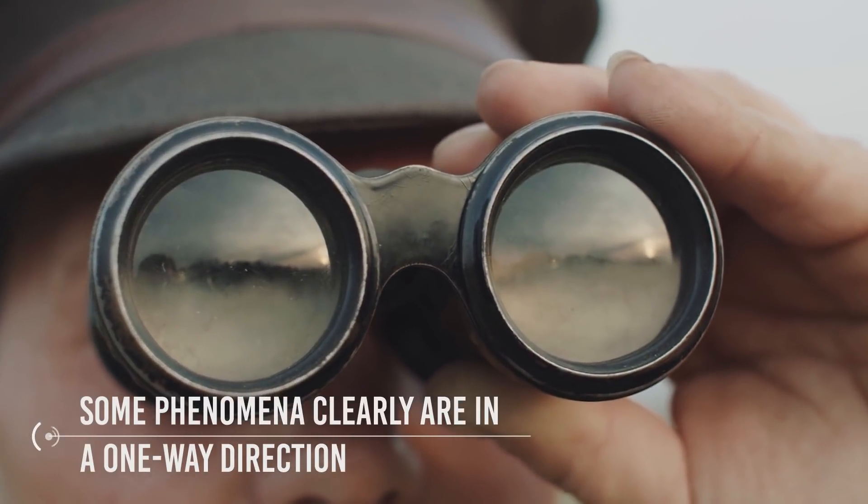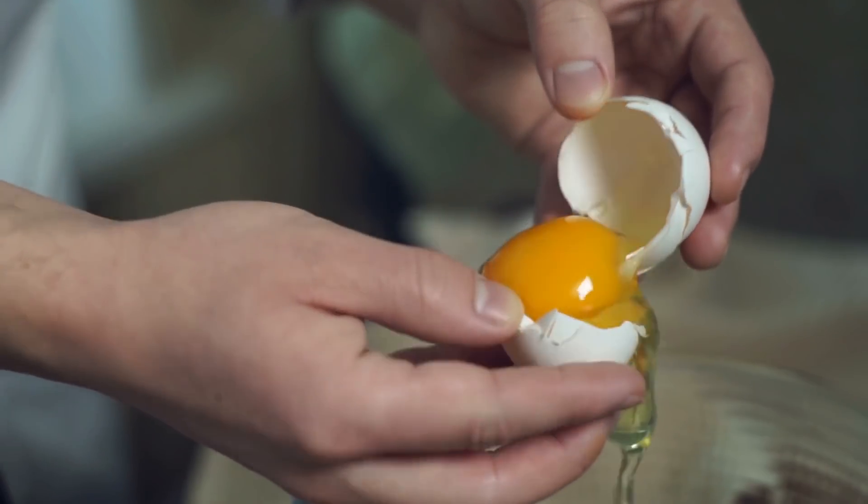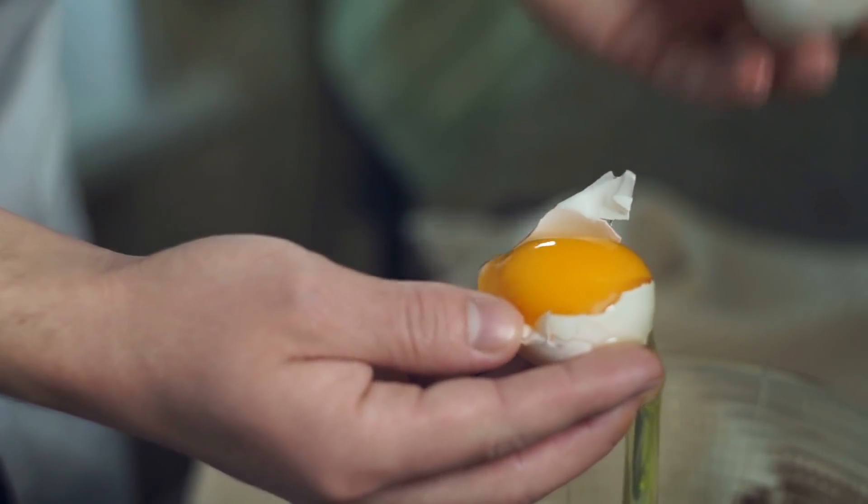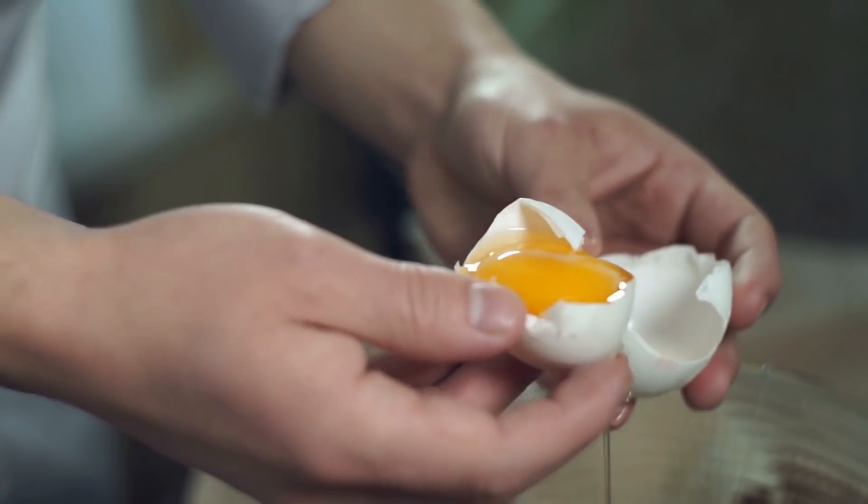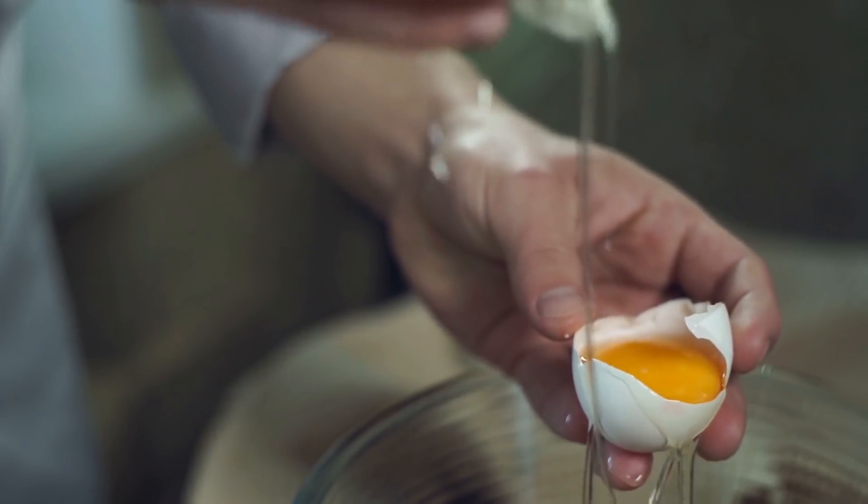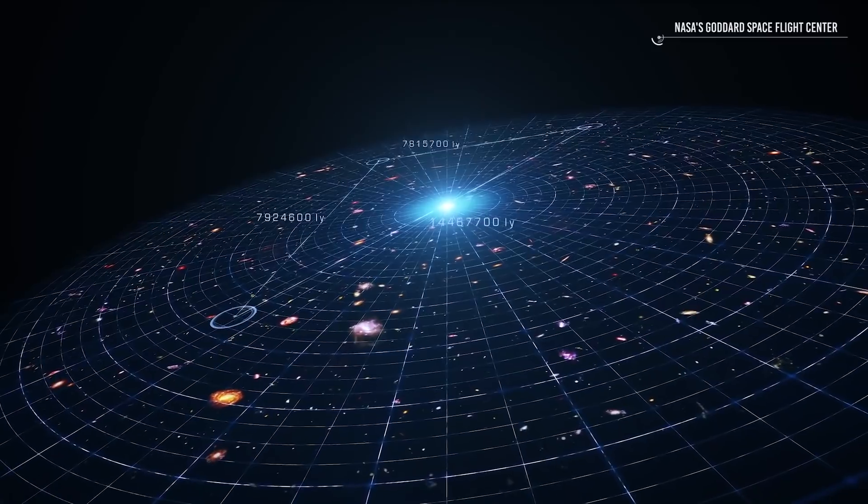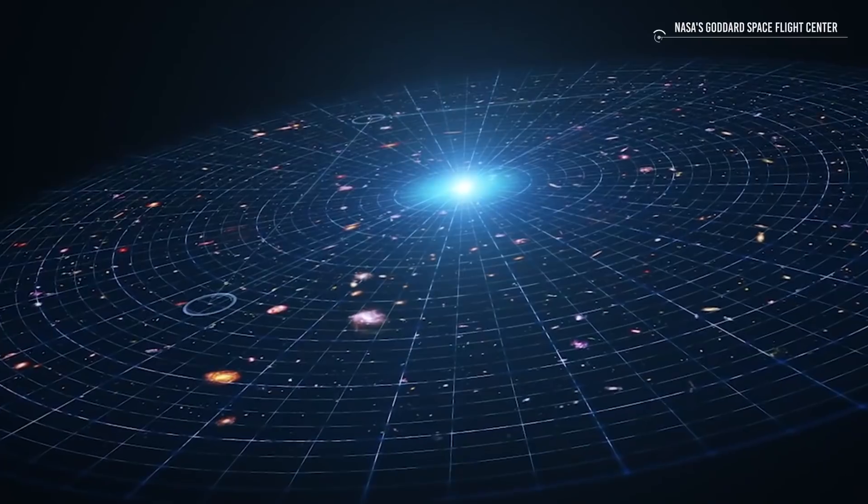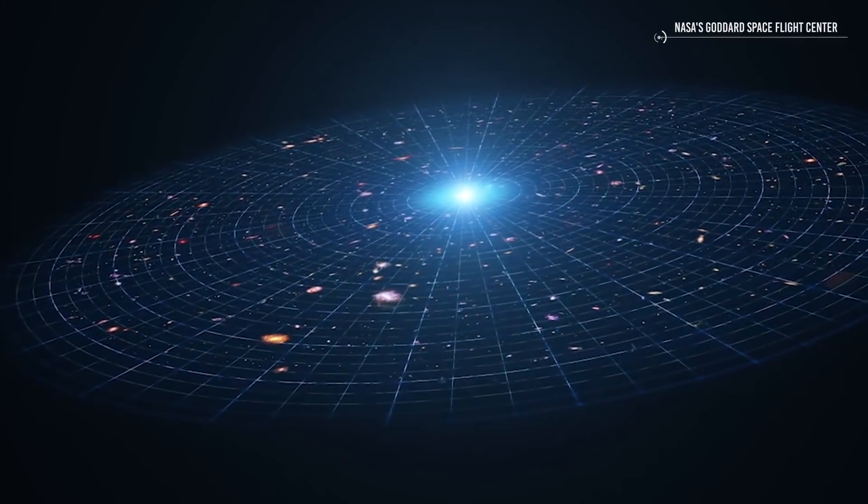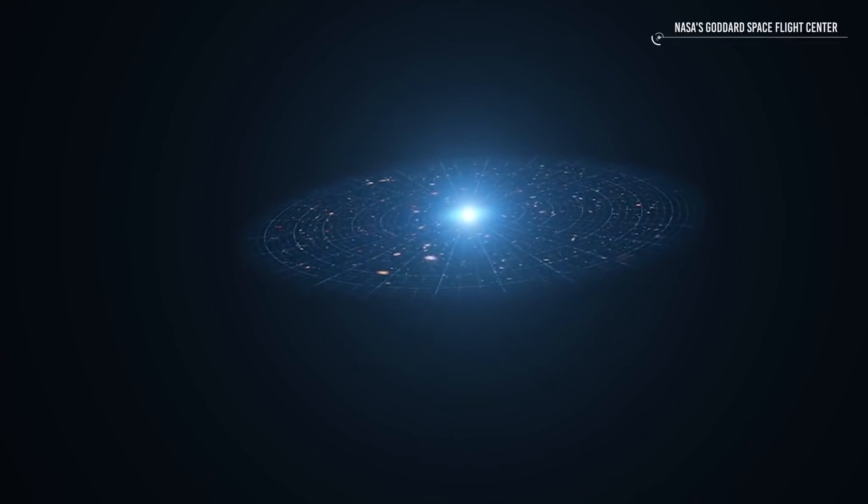But this doesn't appear to be the case for everything we experience in our daily lives. Some phenomena clearly are in a one-way direction. For example, if you take an egg and break it, you can never unbreak the egg. Admittedly, these are complex systems experiencing extremely intricate sets of interactions, the second exception that we mentioned earlier. Now, if you take an expanding universe and apply time reversal symmetry to it, you'll get a contracting universe. The reverse of expansion is contraction, so if you reverse the time, you will have a contracting universe. But there still will be some things happening. Let's take a look at them.